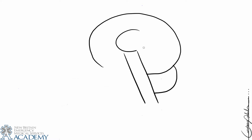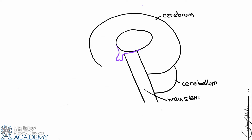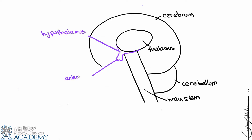Hi everyone. In this video we're going to begin talking about specific endocrine structures, namely the hypothalamus and the pituitary gland. Let's quickly review their location. Considering the brain, we have the cerebellum, the cerebrum, and the brainstem as primary structures, and also the thalamus. In this mid-sagittal section, the hypothalamus is inferior to the thalamus, and the pituitary gland is anterior to the brainstem. The pituitary gland has two components: the anterior pituitary and the posterior pituitary.